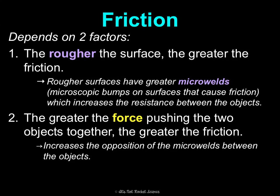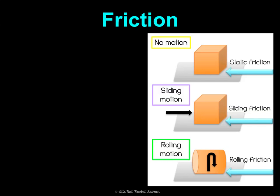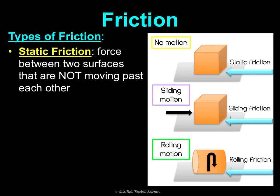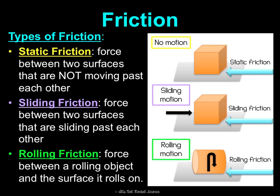There are three types of friction. First is static friction — the force between two surfaces that are not moving past each other, but friction still exists. Sliding friction is the force between two surfaces that are sliding past each other, as if pushing a box along the floor. And rolling friction is between a rolling object and the surface it's rolling on.